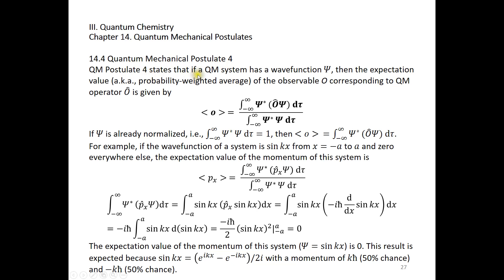Postulate 4 states that if a quantum mechanical system has a wave function psi, then the expectation value of the observable O corresponding to quantum mechanical operator O is given by this equation. Over here, we have the expectation value of the observable O. The notation is this lowercase o enclosed in a pair of brackets. On the right-hand side, we have a fraction. We have this integral on top: the integral of psi star times O psi d tau. And O psi is this O operator being applied to psi.